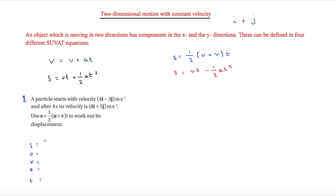Looking at s, that is the thing we're trying to find out. Then u is initial velocity, so it starts with velocity 4, minus 3. Then v, that's its final velocity: 8, 5. Then a is acceleration — we don't have that and we don't need it, because finally t is 4 seconds. Now we can put it into s equals half of u plus v times t.